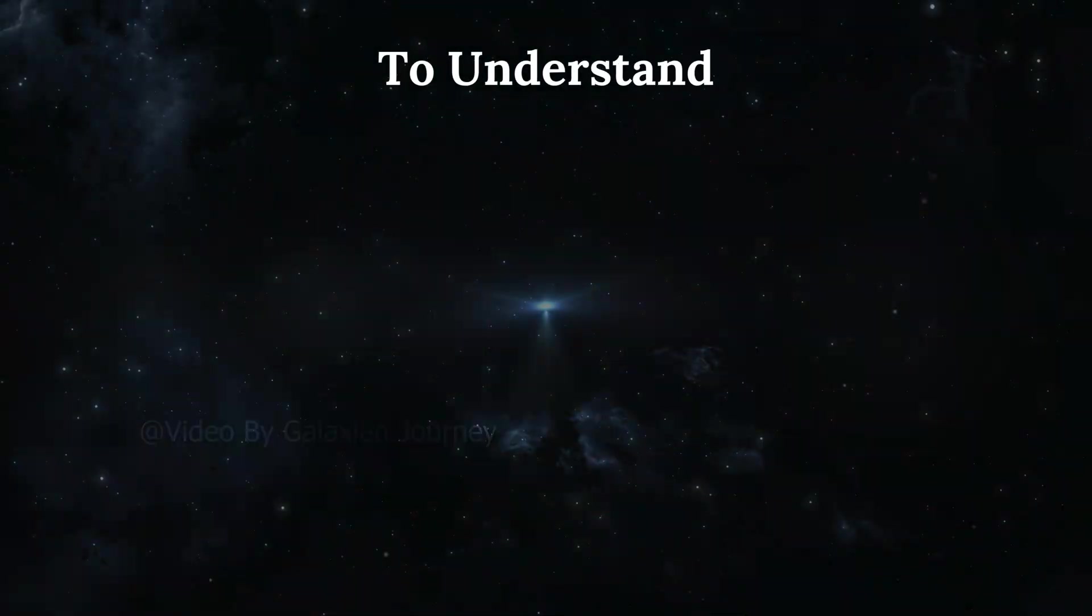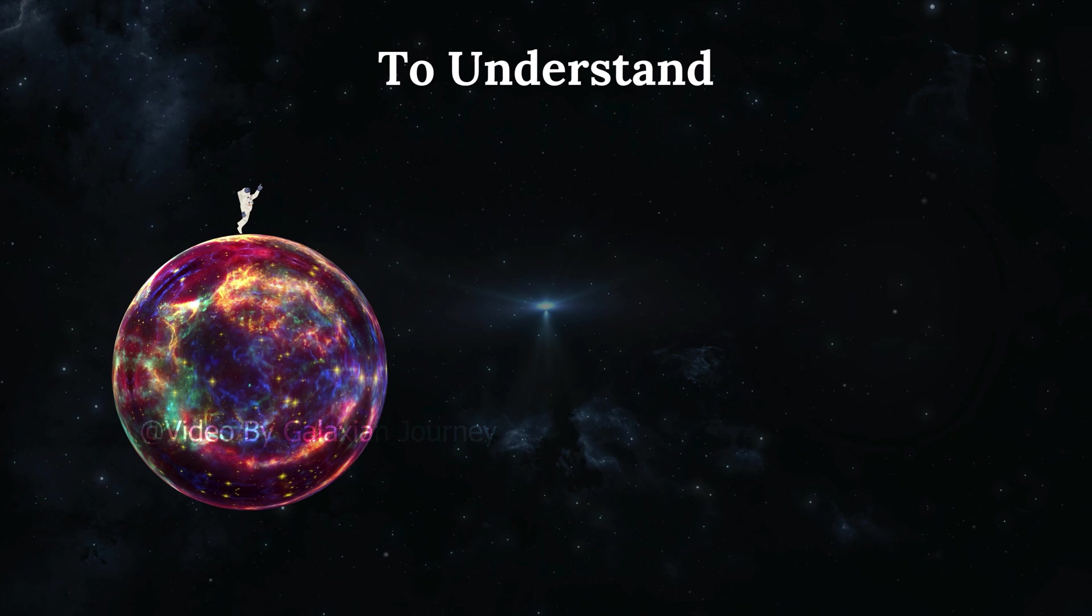To understand, let's consider a scenario where a small object is placed on the surface of a large star. The force of attraction between these two bodies is described by Newton's law, where ms is the mass of the star, mo is the mass of the object, and r is the distance between them.